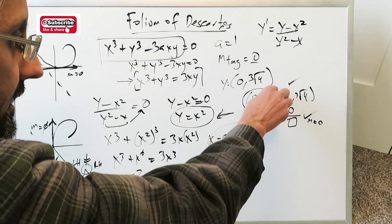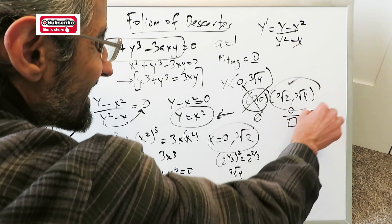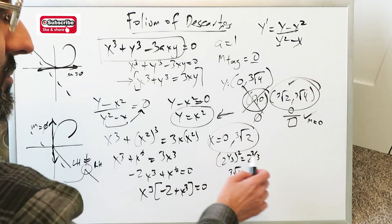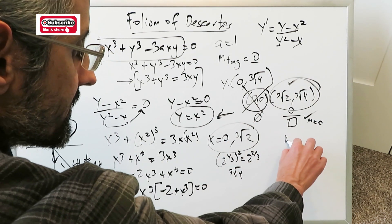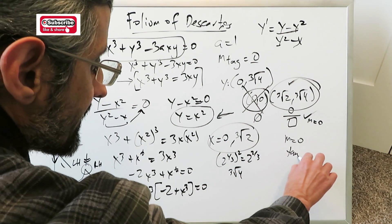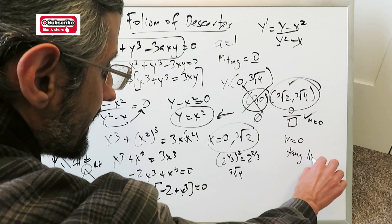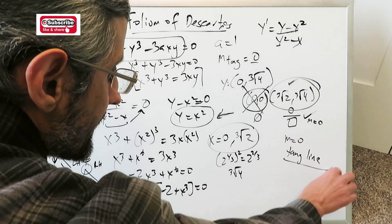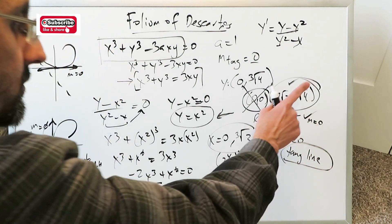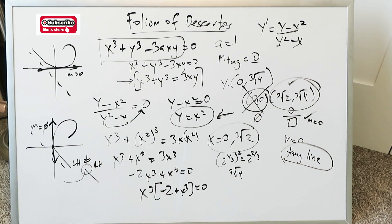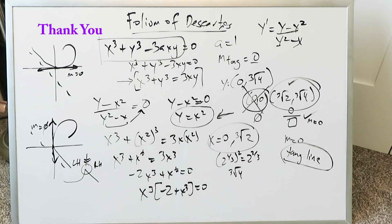Therefore, only one point exists where a horizontal tangent line with slope 0 can be generated on the Folium of Descartes, and that is the coordinate (cube root of 2, cube root of 4) for x and y respectively. With that, I end this video. Thank you for watching. Have a nice day.